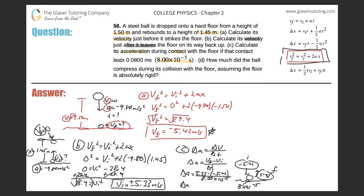Let's throw that into the calculator: 5.33 plus 5.42 — because it's two negatives — divided by 8 times 10 to the minus 5. We get a value of approximately 1.34 times 10 raised to the 5 meters per second squared. So that is the acceleration during contact.